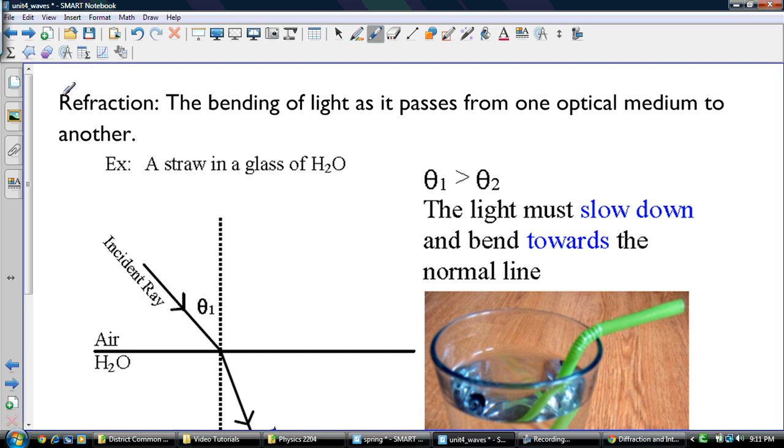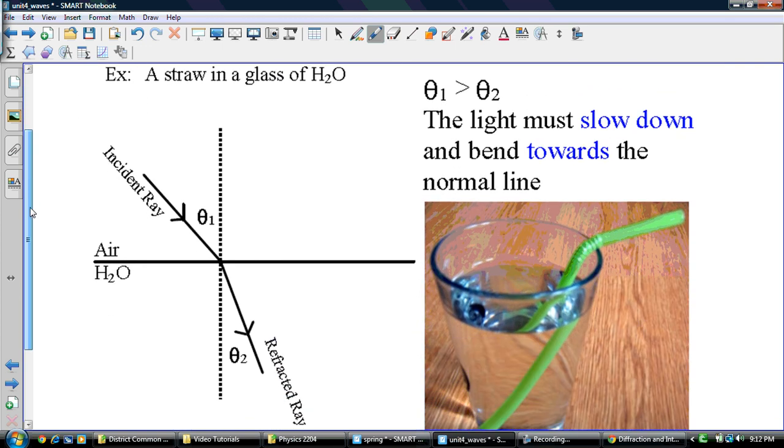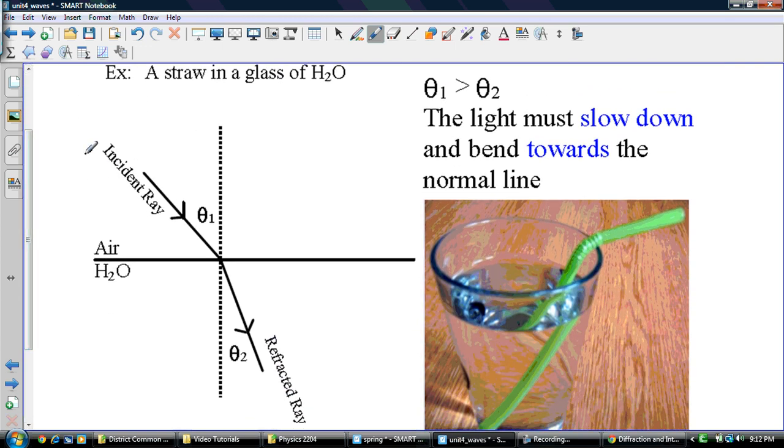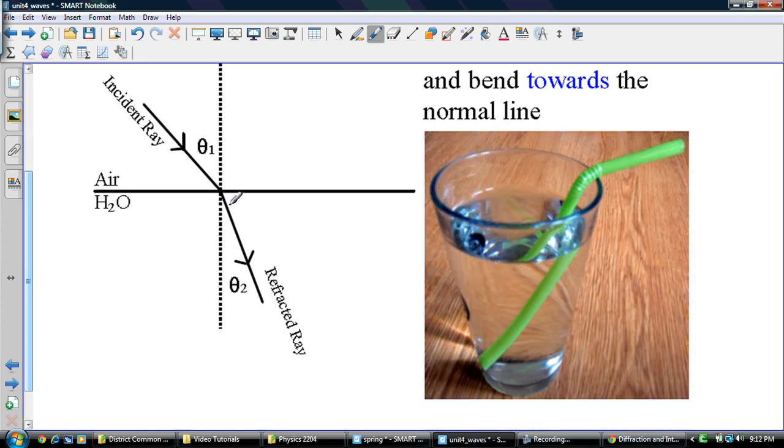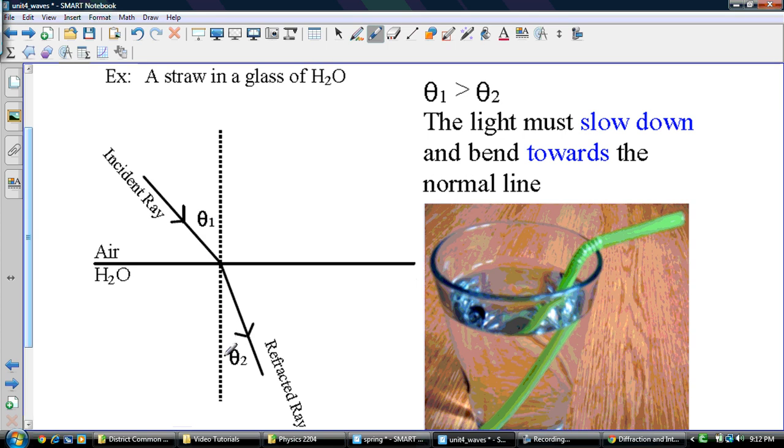We talked about the bending of light, refraction, the bending of light as it passes from one optical medium to another. So the example of that is a straw in a glass. So here you have light ray passing through in the air, and then as it bends here, it gets refracted. And theta 1, right here, is greater than theta 2. The light must slow down and bend towards the normal line.